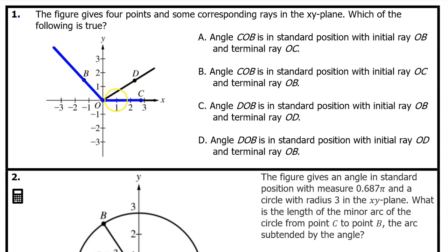Angle COB is in standard position because it does have its vertex at the origin and it has one side on the positive x-axis. However, the side of the angle on the positive x-axis is the initial ray and the other side is the terminal ray. So, option A is backwards. It says the initial ray is OB, but the initial ray is OC and the terminal ray is OB. That's why the answer is B. Angle COB is in standard position with initial ray OC and terminal ray OB.